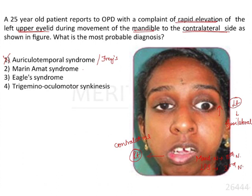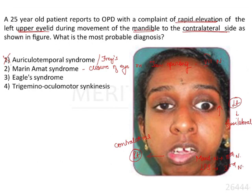Next is Maren-Amit syndrome, which is a kind of synkinesis. The most characteristic presentation is spontaneous closure of the eye on mouth opening or jaw opening — an involuntary closure of the eye as the patient opens the jaw. This is due to aberrant facial nerve regeneration and is seen in patients with facial paralysis or those who have recovered from it. This does not match our case, so it can be omitted.